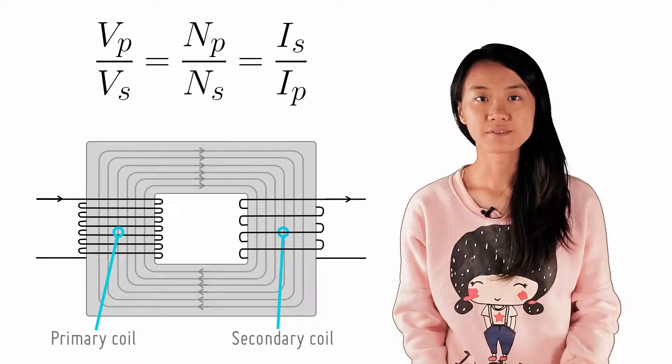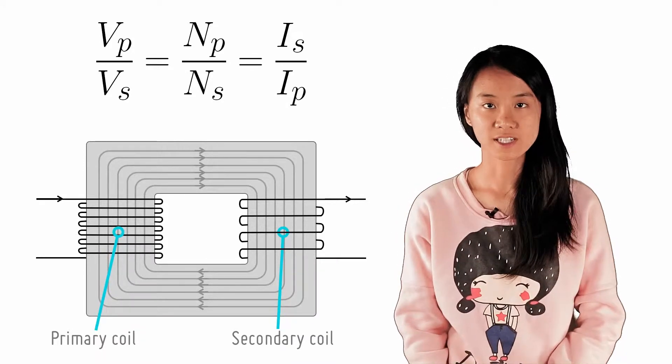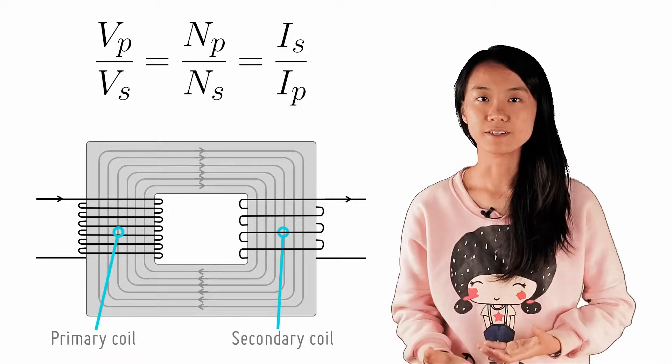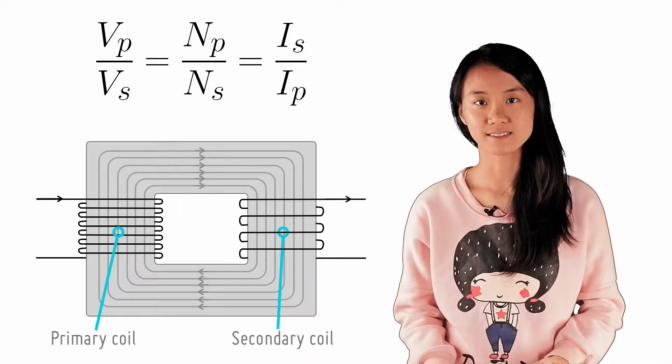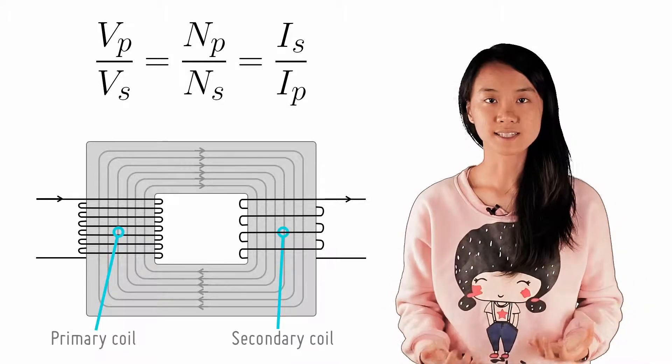In the previous checkpoint, we looked at the voltage and current output of a transformer. In the derivation, we made a few assumptions given that the transformer was ideal. Can you remember what these assumptions are?